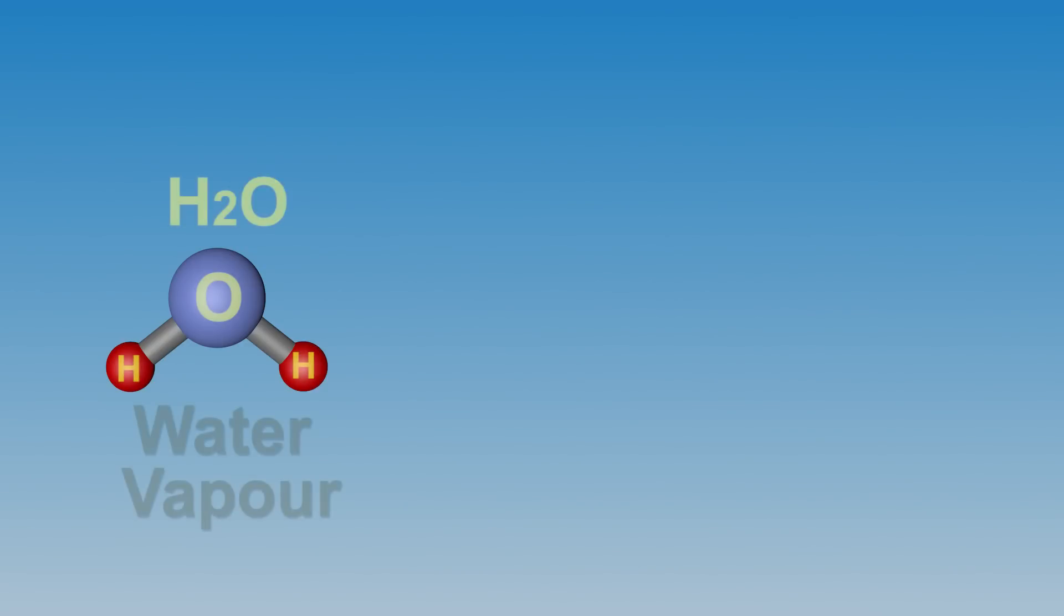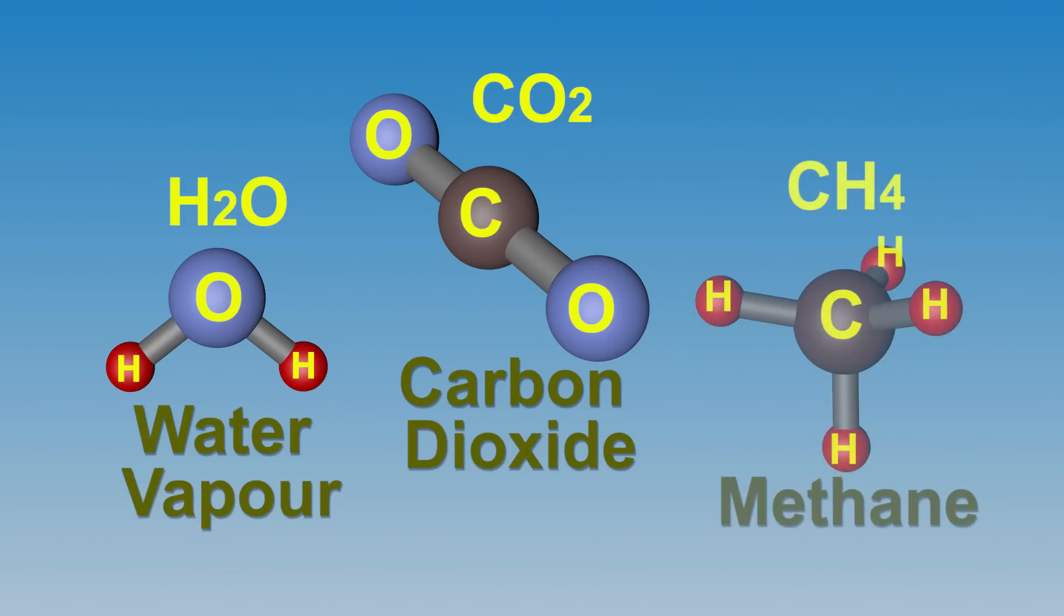The gases which block this escaping heat are water vapor, carbon dioxide, methane, etc., and they are called greenhouse gases. Now we have two questions.